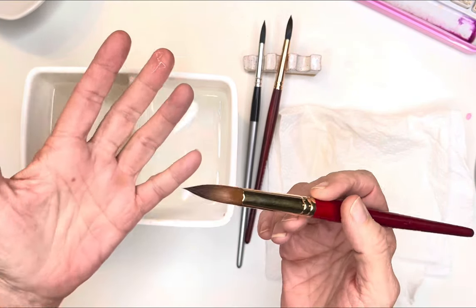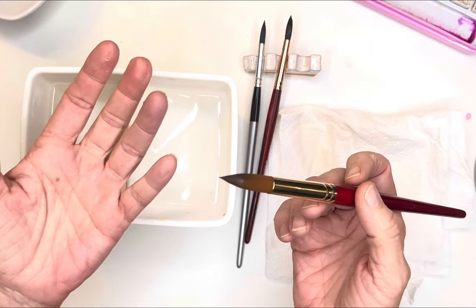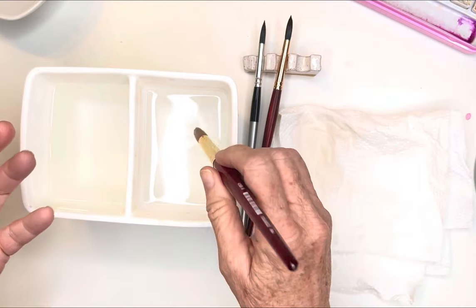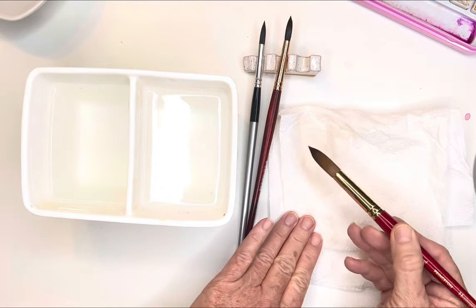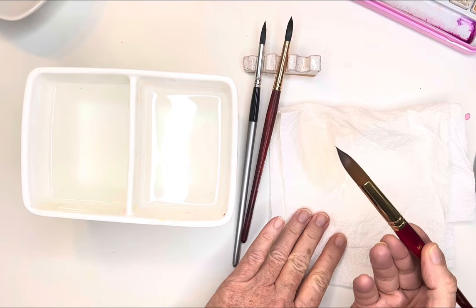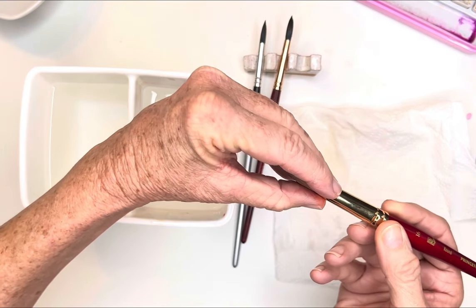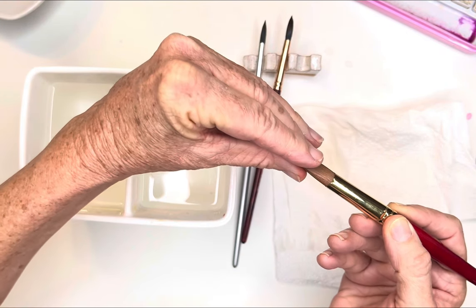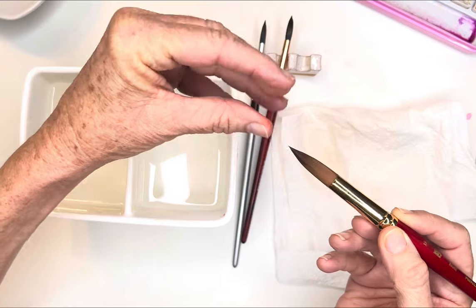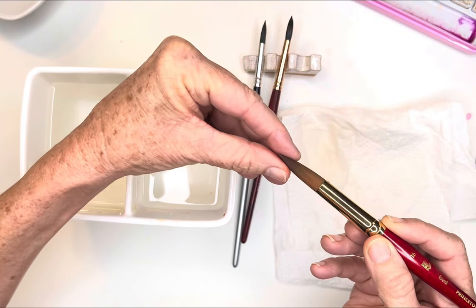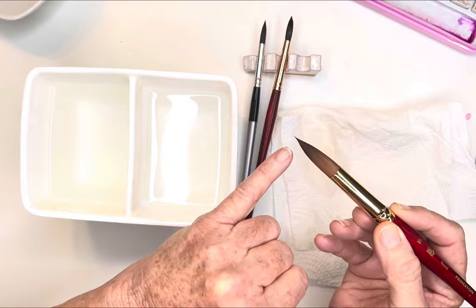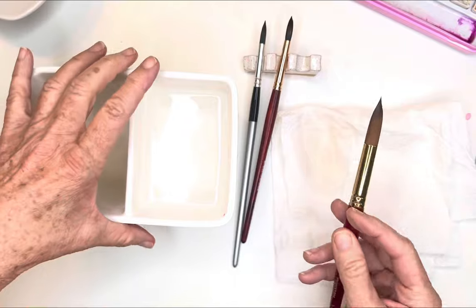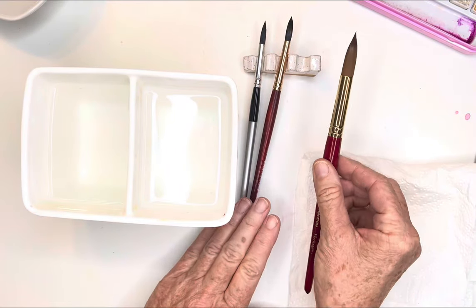I always make sure when I am done painting, so I've dried it off, I've made sure there's no paint in it, and I will kind of squeegee it out with my fingers. So I just do this and it gets all that water out and it also puts it back into the tip. So you're shaping it so it dries.